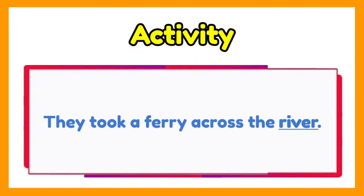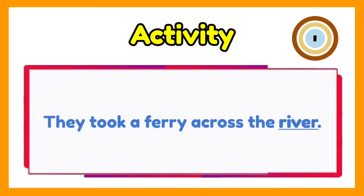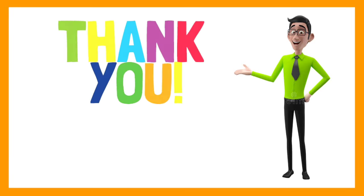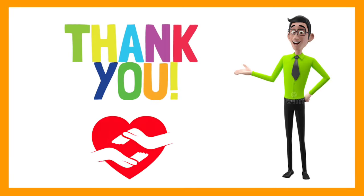Last one: They took a ferry across the river. River is used as an object of the preposition, because it comes after the preposition across. That would be all for this video. Thank you for watching. Stay safe.